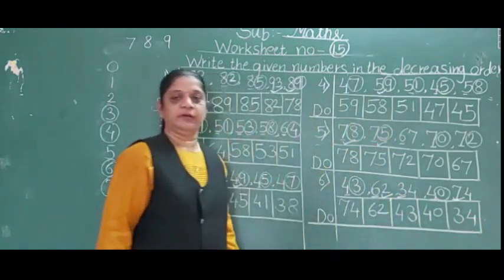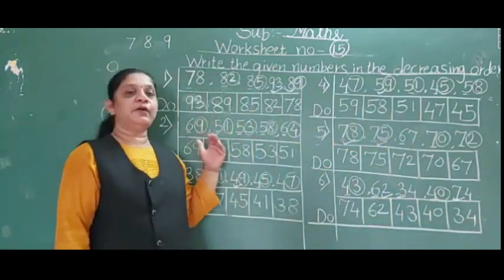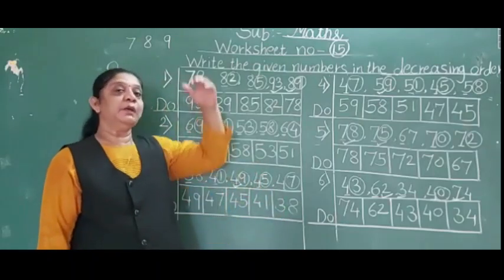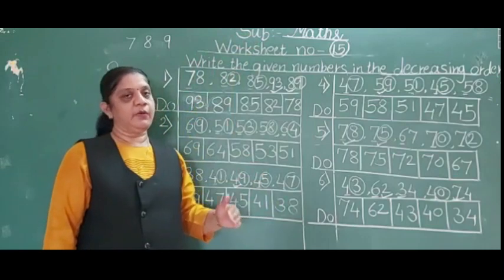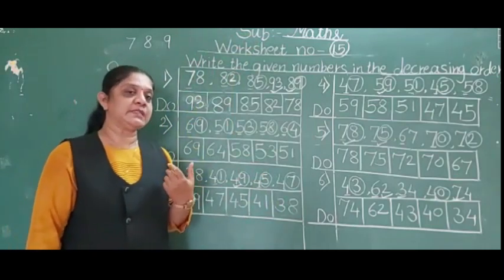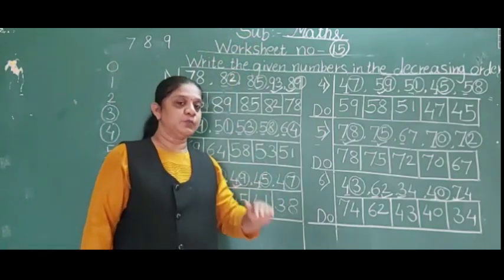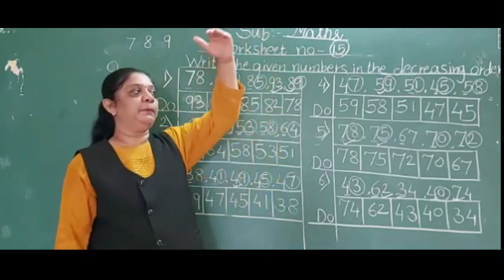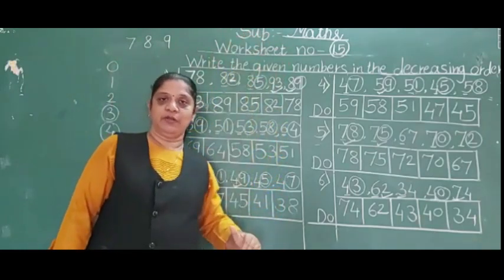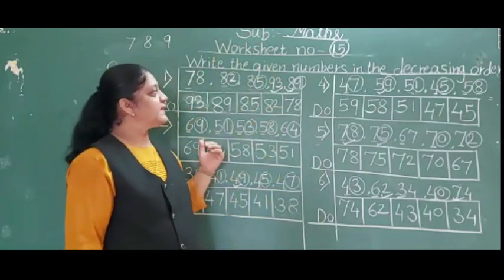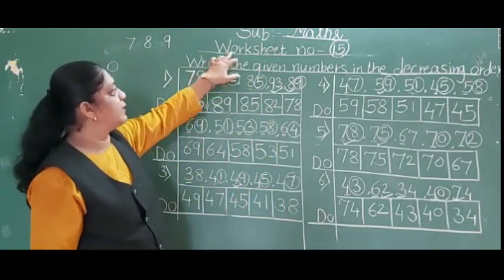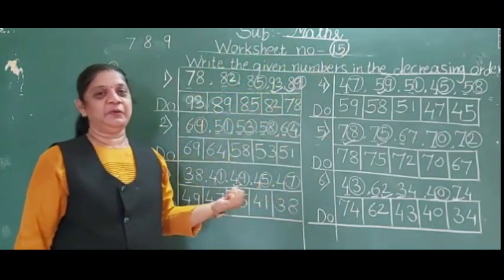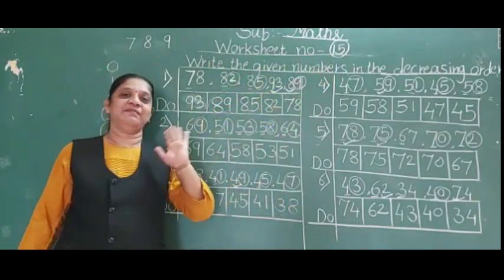Understood? Decreasing order means descending order, and descending order means big to small. Ascending order means small to big and descending order means big to small. Now you can solve worksheet number 50 — it is very easy. Okay, bye.